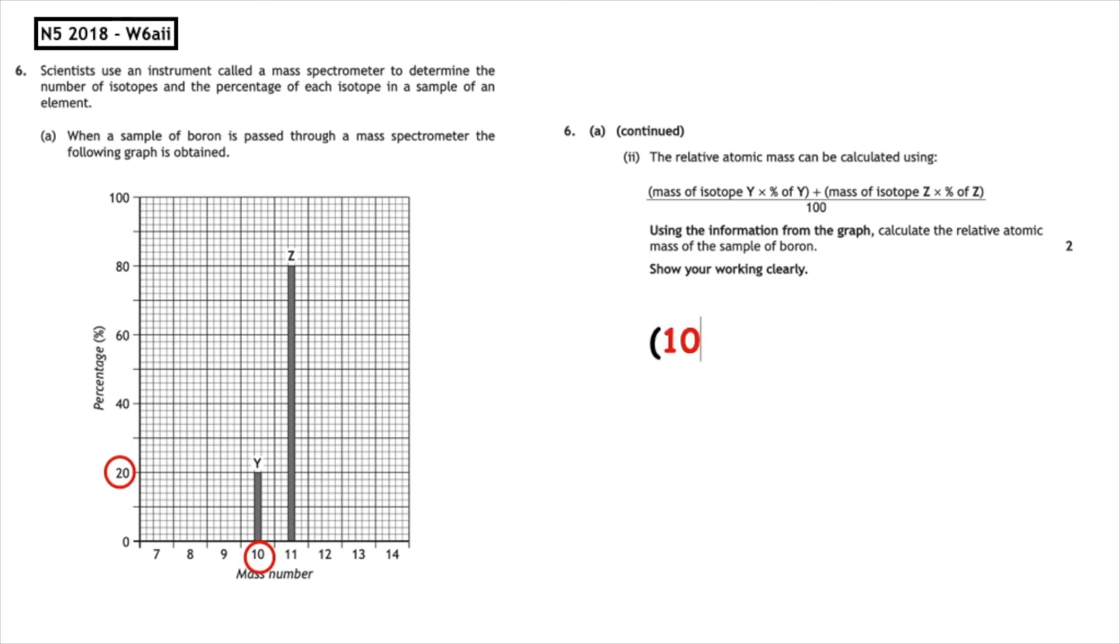Plus, we have to add the mass of isotope Z, which is 11, and multiply it by the percentage, which is on the y-axis of 80, and then divide by 100. When we pop that into our calculator, we get a relative atomic mass of 10.8.